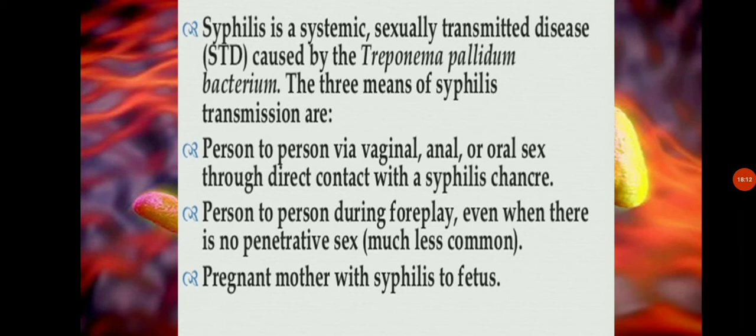The first stage of syphilis is characterized by a small, red, painless sore called a chancre. It appears where the germ entered the body — in females, usually in the vagina, cervix, or folds of the labia. It disappears within 1 to 5 weeks, but the disease continues to develop in the body. In the second stage, the most common symptom is a highly contagious rash that may appear anywhere on the body. In women, it usually appears on the outer edge of the vagina.